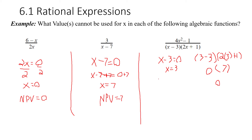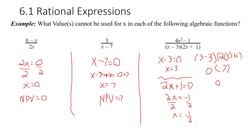Now let's find the non-permissible value for 2x plus one. Set it equal to zero, subtract one from both sides, then divide both sides by two. You find x equals negative one-half. Verifying: two times negative one-half equals negative one, and negative one plus one is zero. Zero times anything is zero, so the whole denominator would be zero. Our two non-permissible values are negative one-half and positive three.